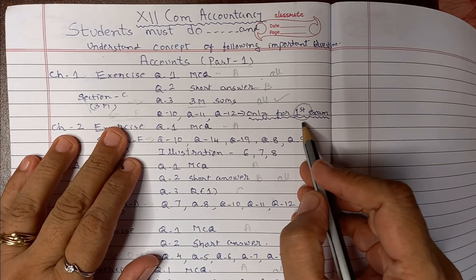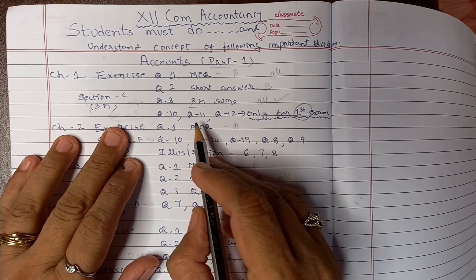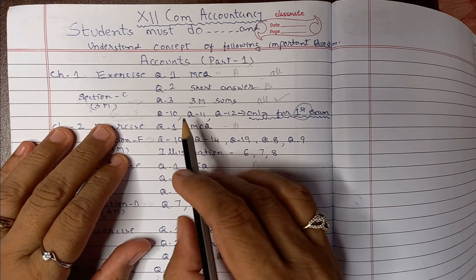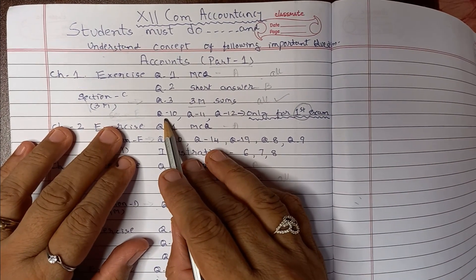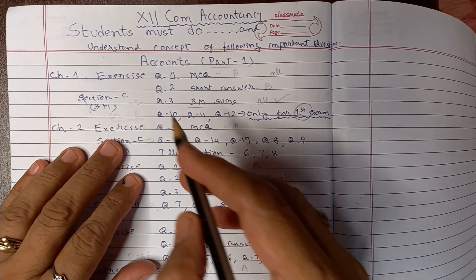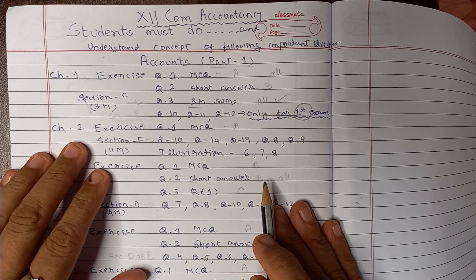Otherwise normally you don't have, but because less number of chapters it may be there in the E section also. For that you have to prepare question 10, 11, 12 and like this. So chapter 1 is over, let us see now chapter 2.